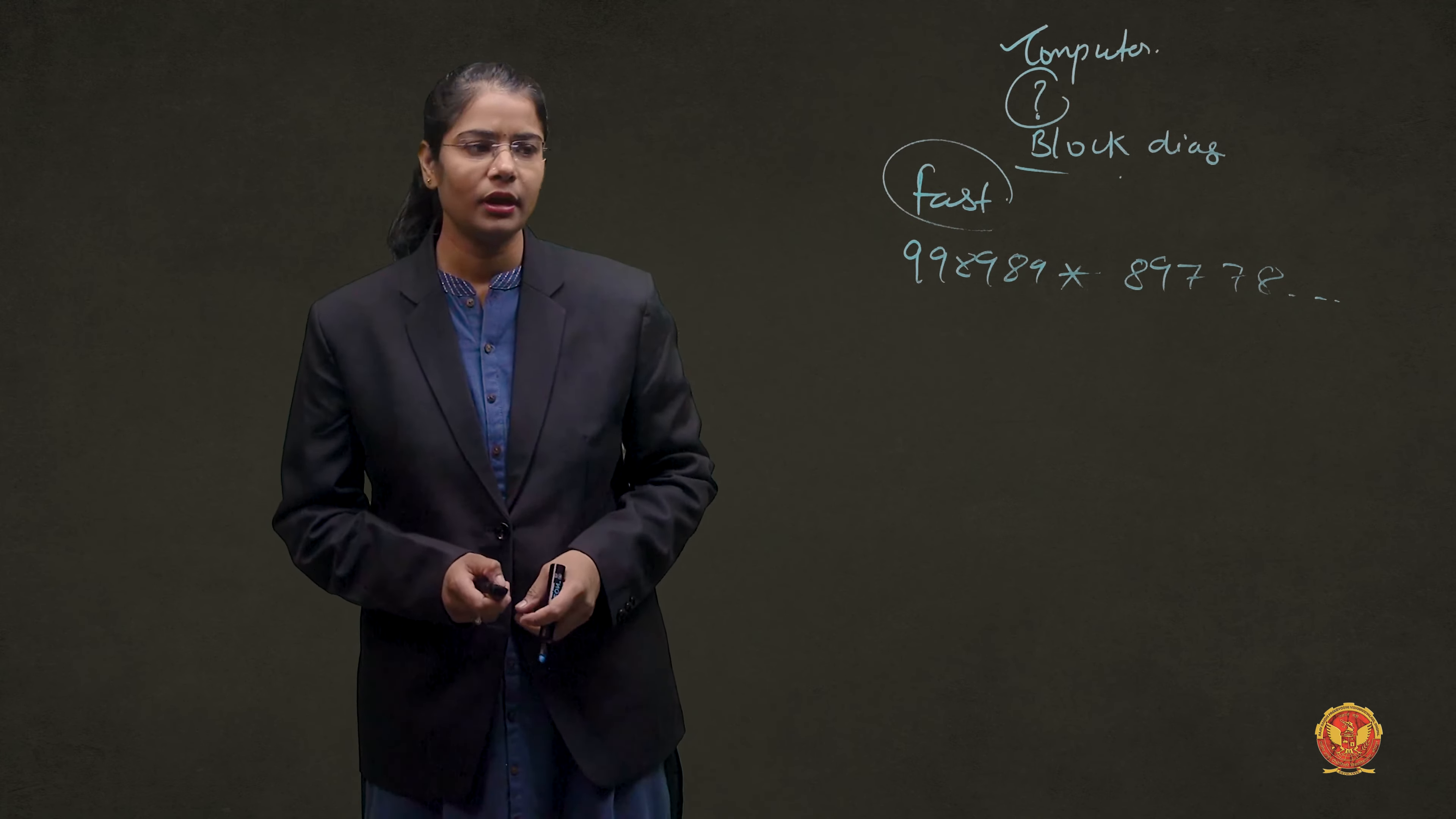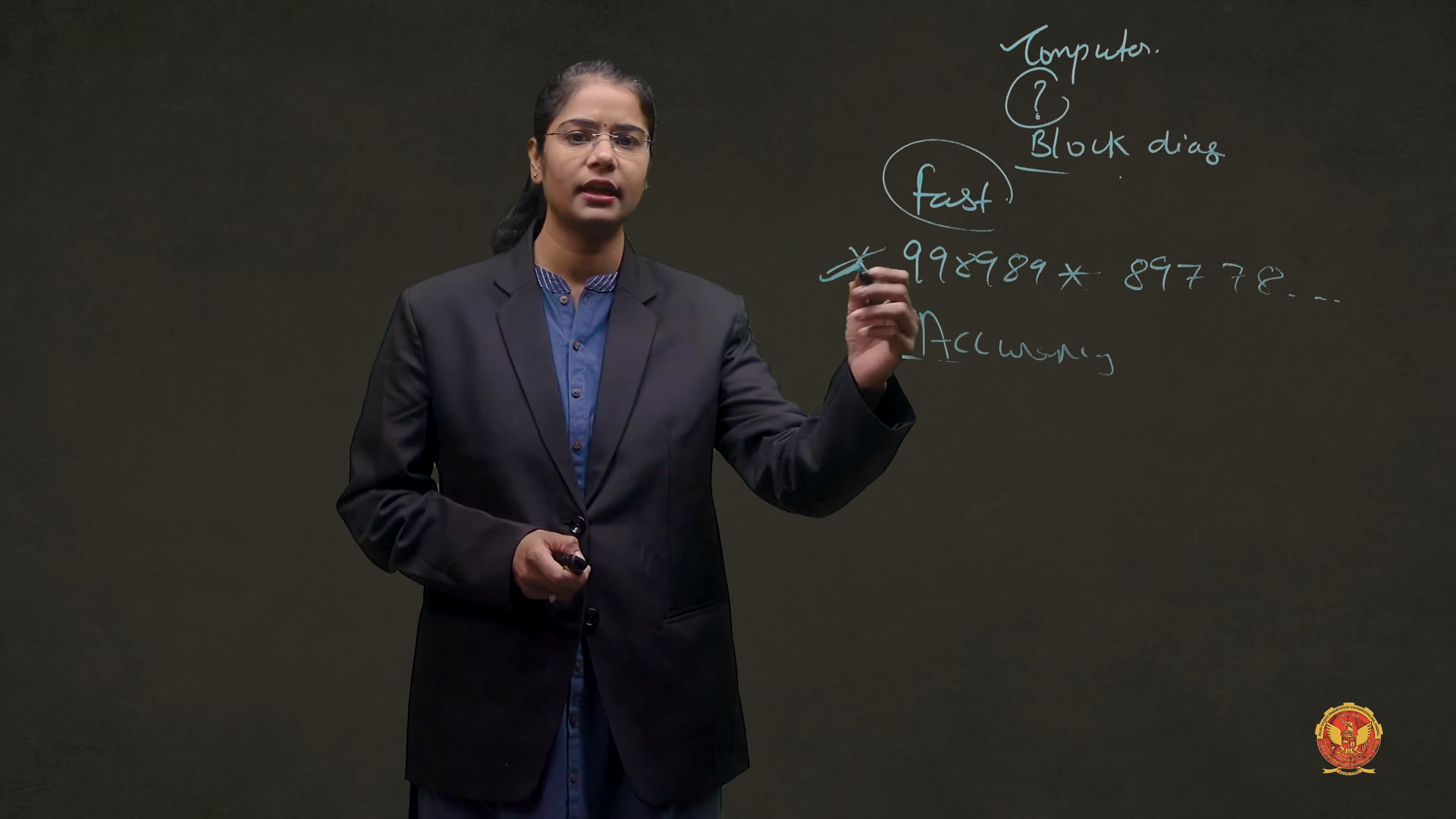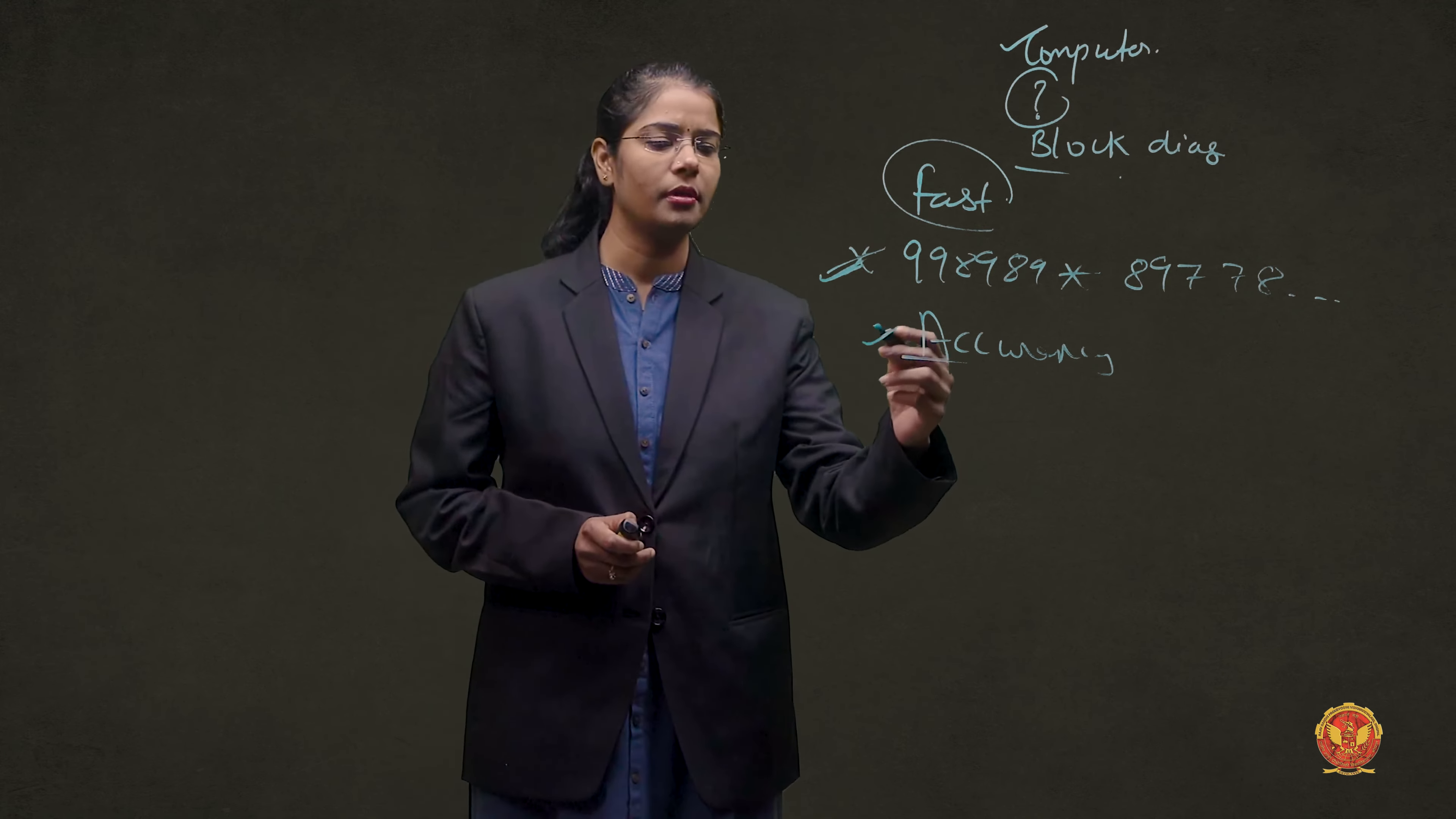And what happens with this? It provides accuracy. Now, what happens? If you have to solve a problem or execute complex instructions manually, we are not sure that the output or the result of the calculation is correct or not. We must recheck one time. When you go to our paper, you will see that when a numerical problem comes and you manually do it, you will recheck one time. So, there is a problem with human accuracy.